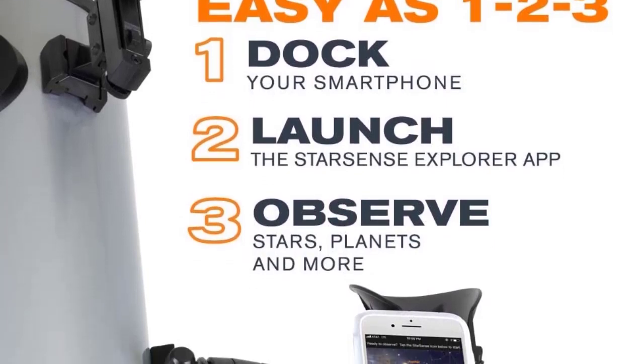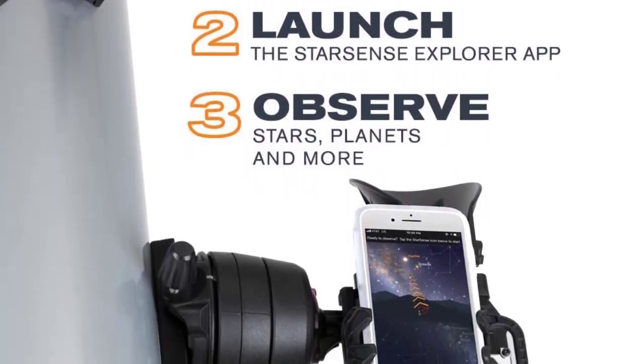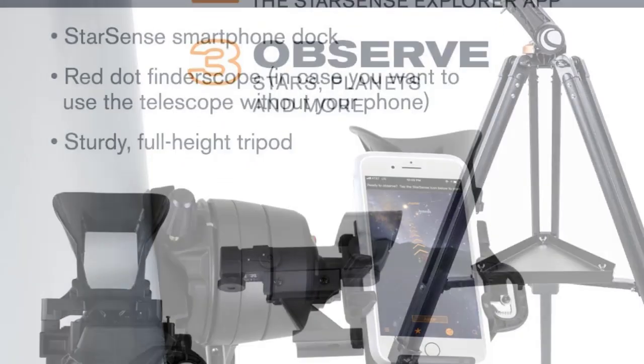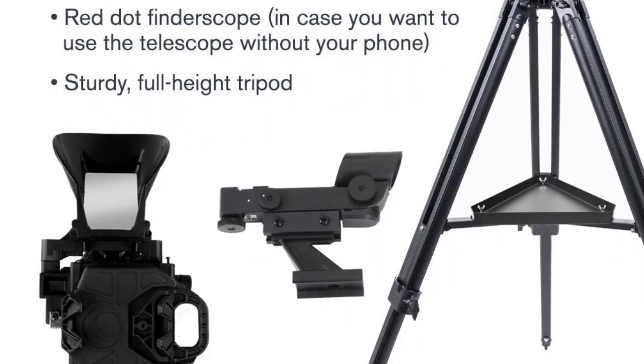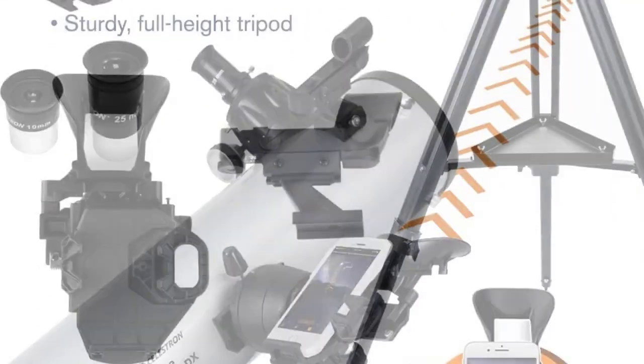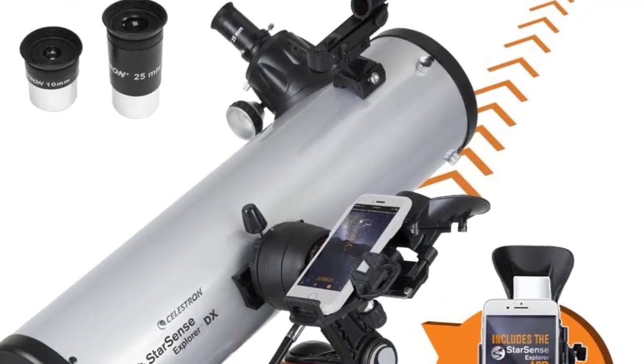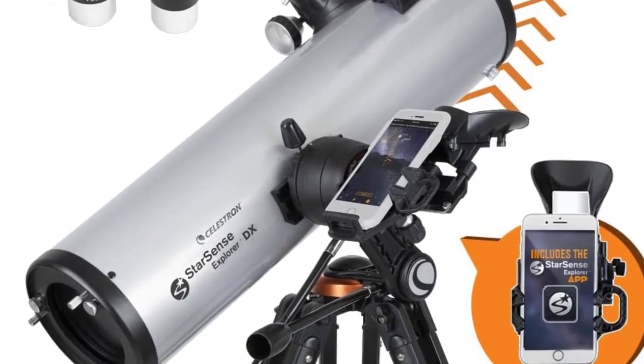The equatorial head and two slow-motion cables provide smooth, accurate tracking of celestial objects, making it easy to follow the movement of the night sky, while the adjustable height tripod and counterweight bar ensure a stable platform. The star pointer finder scope makes it easy to locate objects in the night sky and the included 7.5 pounds counterweight provides the necessary balance.